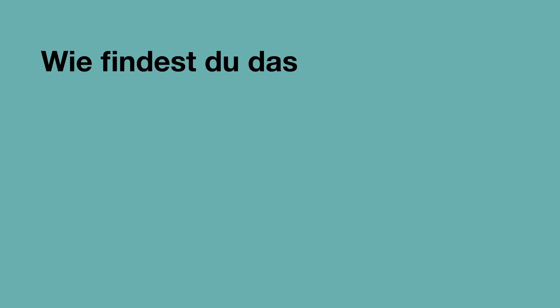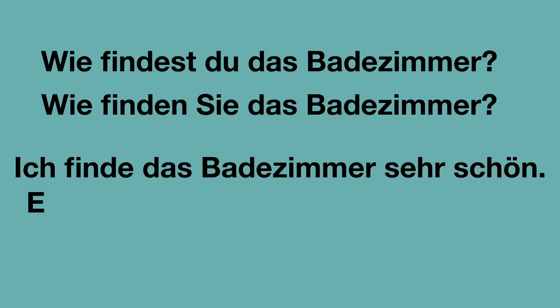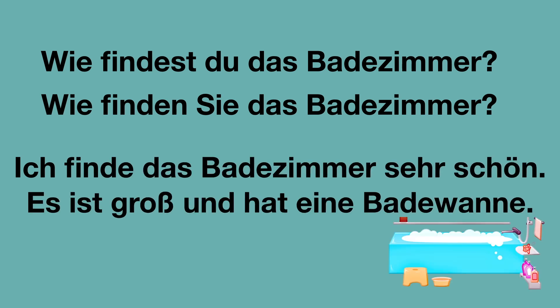Wie findest du das Badezimmer? How do you find the bathroom? In der Sie-Form: Wie finden Sie das Badezimmer? Und die Antwort: Ich finde das Badezimmer sehr schön. Es ist groß und hat eine Badewanne. 'Es' refers to 'das Badezimmer' — so all nouns with the article 'das', the correct pronoun is 'es'. The whole thing translates to: I find the bathroom very beautiful. It is big and has a bathtub.